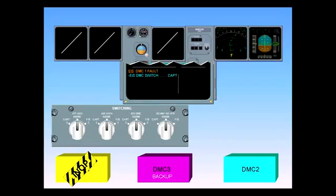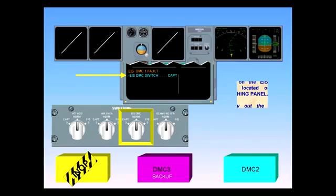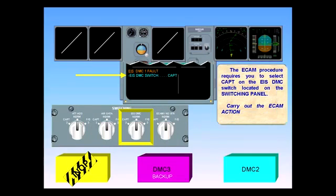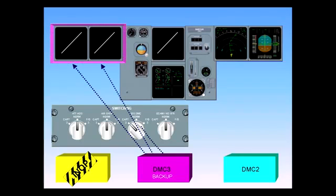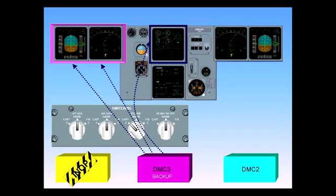The ECAM procedure requires you to select Captain on the EIS-DMC switch, located on the switching panel. Carry out the ECAM action. DMC-3 will now supply information to the three displays, and the EWD is automatically transferred back to the upper ECAM display.